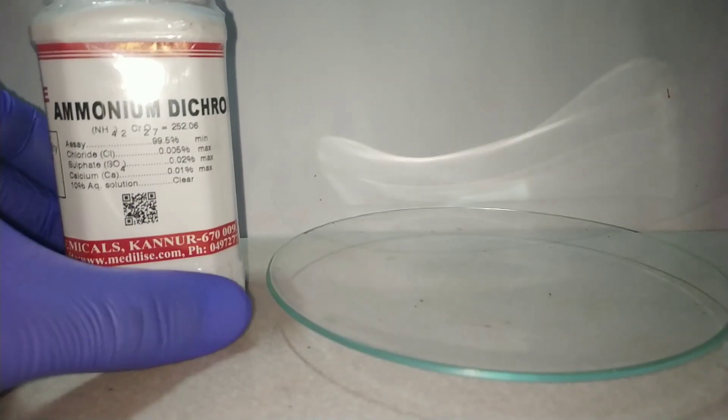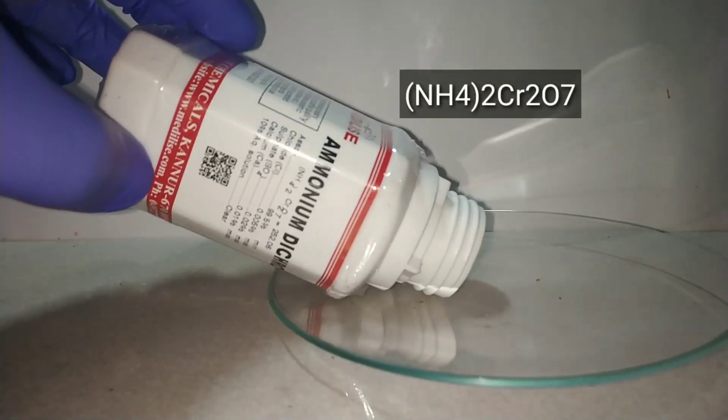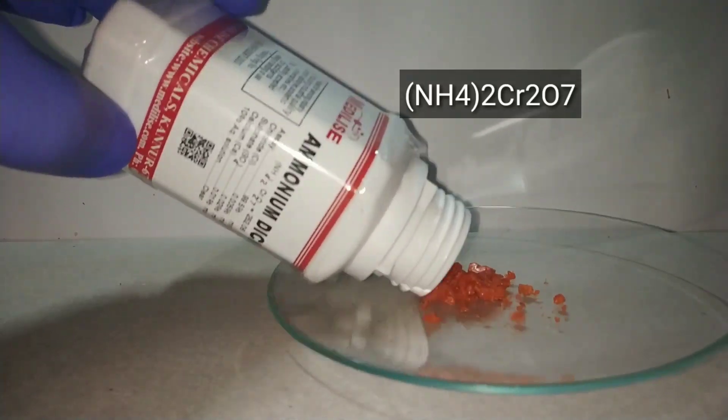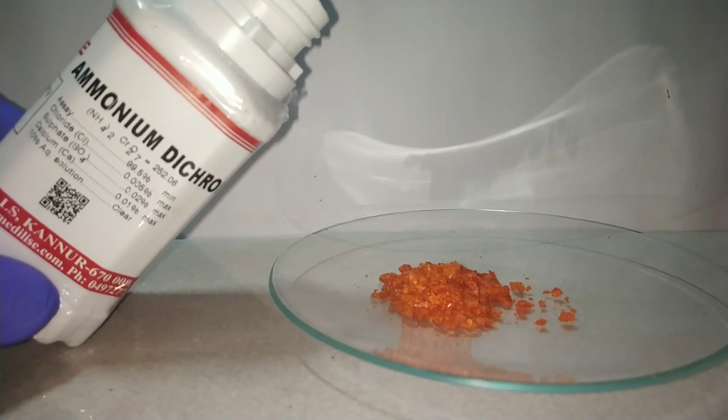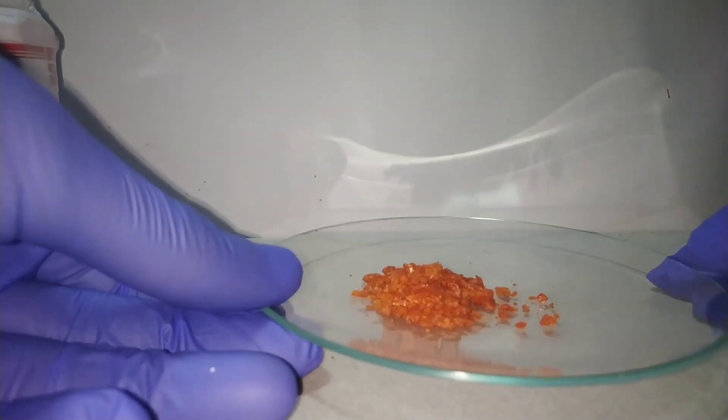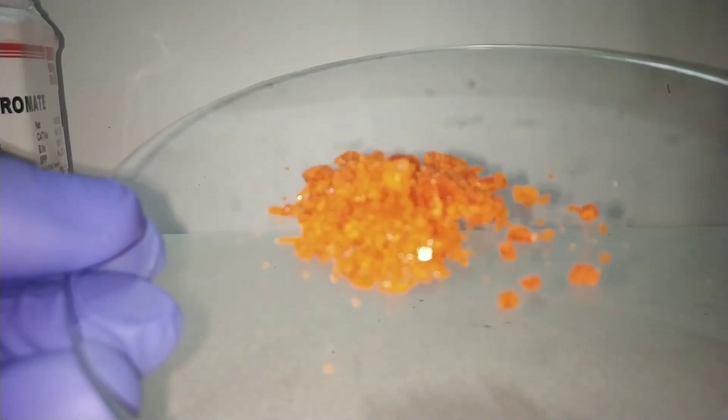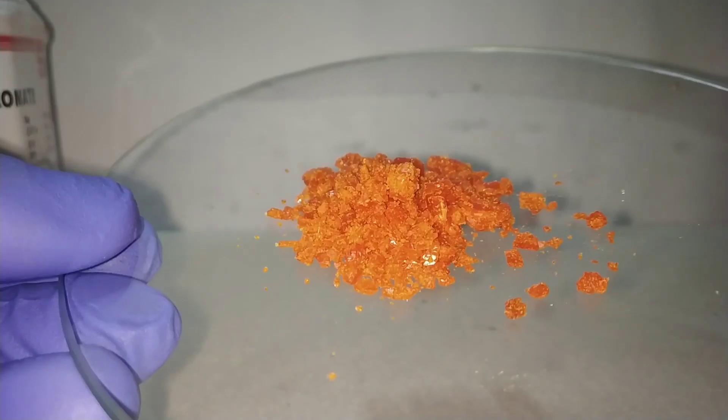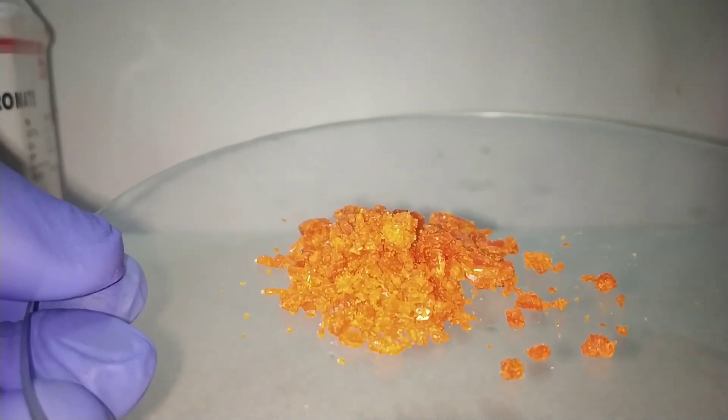Ammonium dichromate with its chemical formula being NH4-2Cr2O7 is an inorganic compound which has orange colored crystalline structure. It has chromium in plus 6 oxidation state, commonly known as the hexavalent chromium ion. Ammonium dichromate is synthesized in the laboratory by reaction of chromium trioxide, that is chromic acid, with ammonium hydroxide.